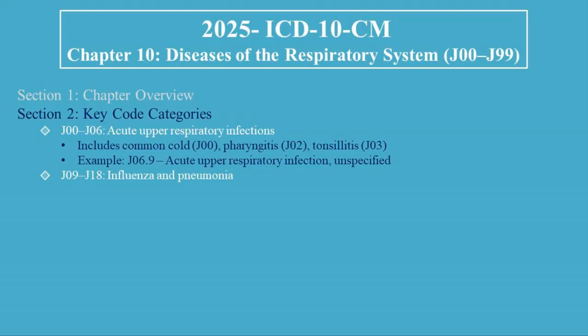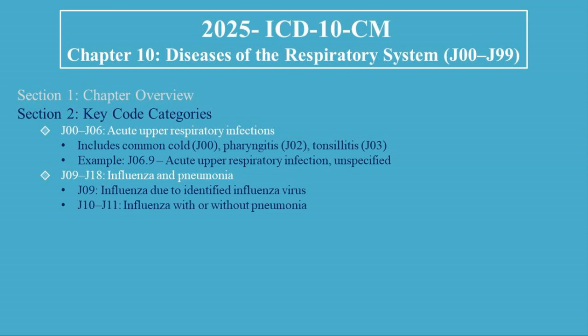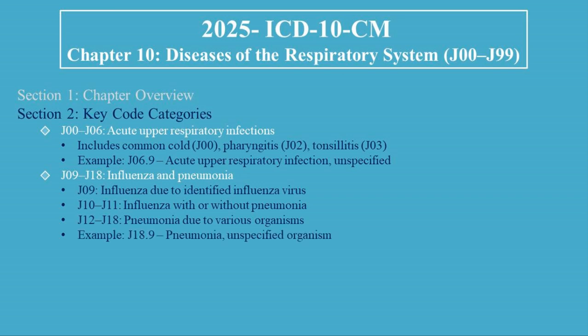J09 to J18 covers Influenza and Pneumonia. J09 is Influenza due to identified influenza virus. J10-J11 covers influenza with or without pneumonia. J12-J18 covers pneumonia due to various organisms. Example: J18.9, Pneumonia, Unspecified Organism.